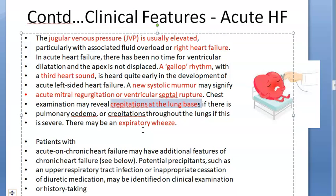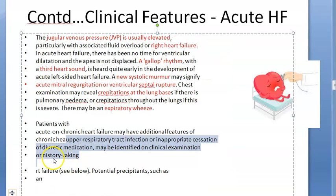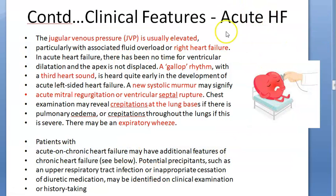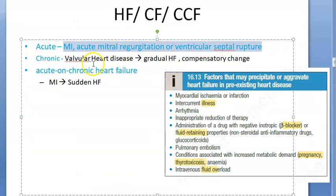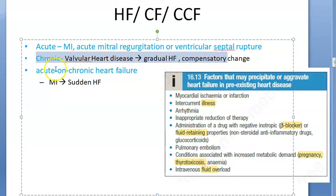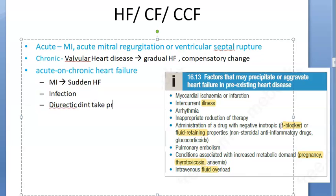Causes of acute heart failure include myocardial infarction, acute mitral regurgitation, and ventricular septal rupture. These patients will have pulmonary edema with crepitations at the lung bases, or throughout if severe. It could also be acute-on-chronic failure — a chronic condition with an acute episode triggered by infection, not taking diuretic medication properly, IV fluids overload, or arrhythmias. You need to find the potential trigger.